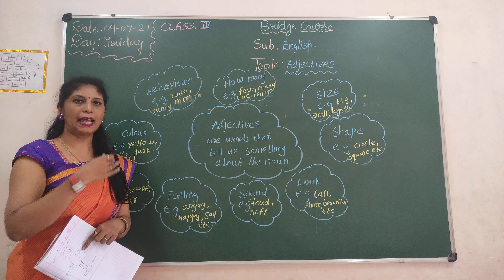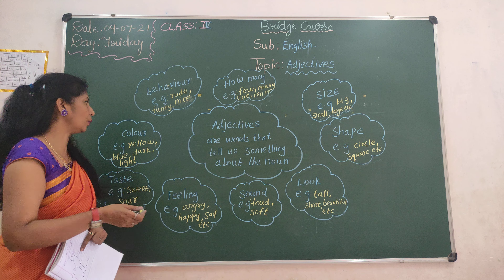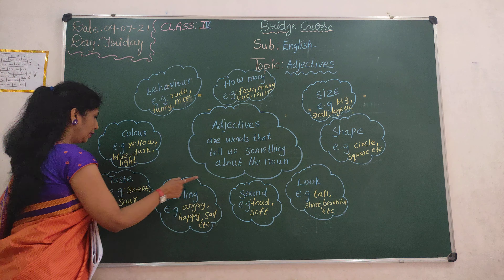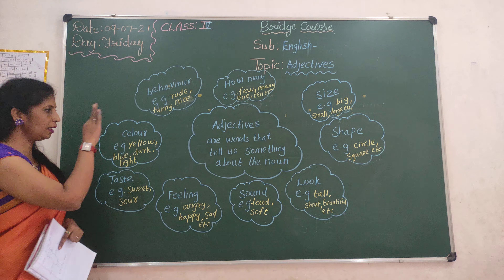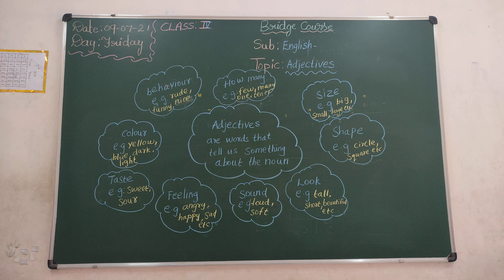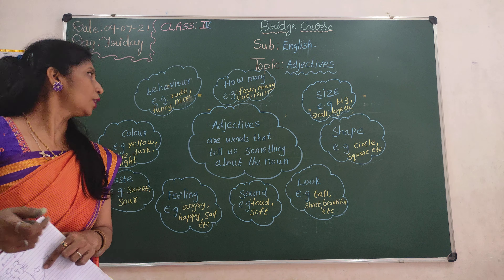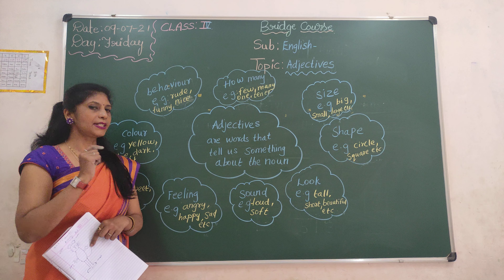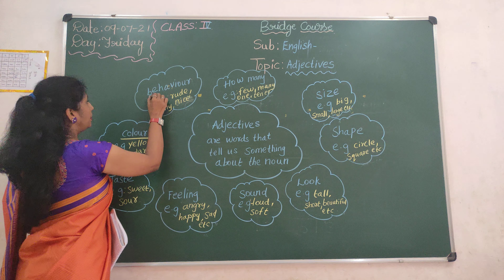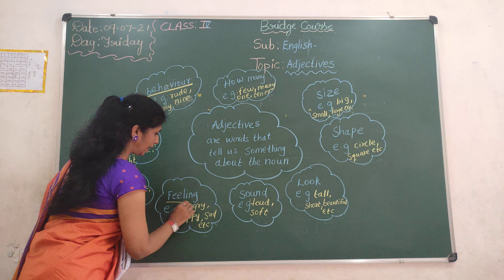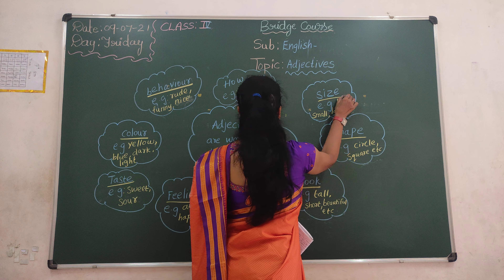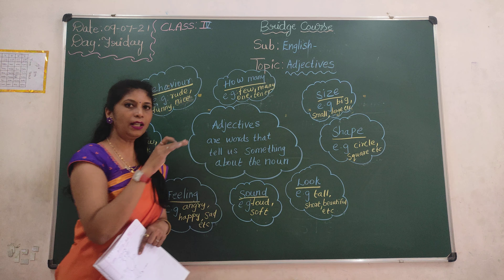Adjectives are words that tell us something about the noun. Color, behavior, how many, size, shape, look, sound, feeling, taste — these are adjectives. Understood? So children: color, behavior, taste, feeling, sound, look, shape, size, how many — these are adjectives.